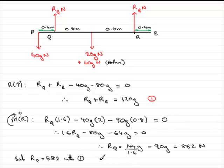And because I'm running out of room here, it's not too hard to see that RR, the reaction at R, is going to be 120g minus RQ minus the 90g, which is 882.